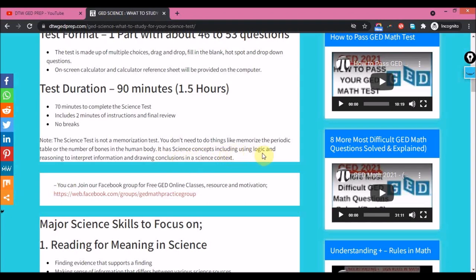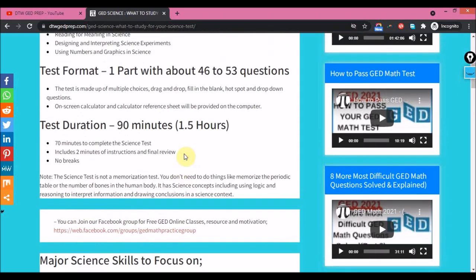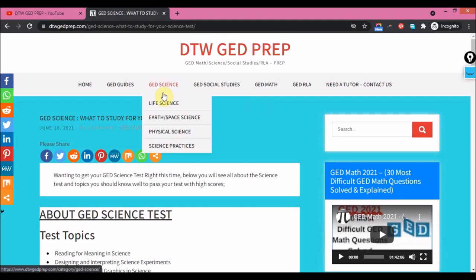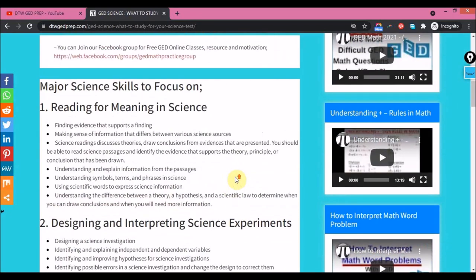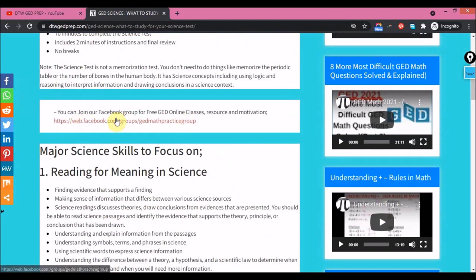All you need to know is just understand science concepts. It has concepts including using logic and reasoning to interpret information and drawing conclusions from a science text. So all you need to do is just have a knowledge of some science terms, and this is where all these summaries would help you - just having a knowledge of it, not memorizing it. Reading for understanding. And this is a link to the Facebook group if you want to join.